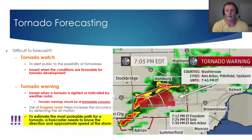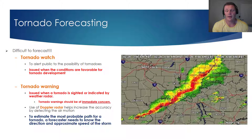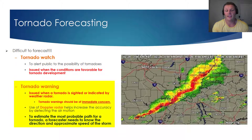It's very important to note that to estimate the most probable path for a tornado, a forecaster needs to know the direction and the approximate speed of the storm. When meteorologists are able to piece together that data, they are capable of predicting a very accurate path for that tornado once it's on the ground. To summarize: a tornado watch is issued when conditions are favorable for tornado development, whereas a tornado warning is issued when a tornado is sighted or indicated by weather radar.